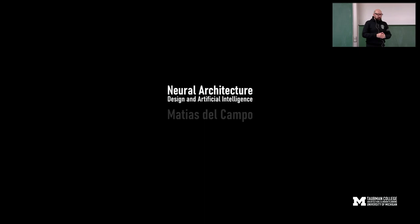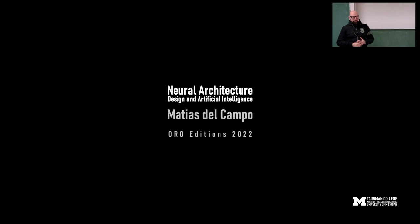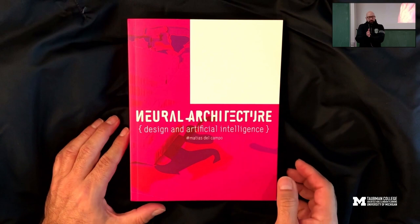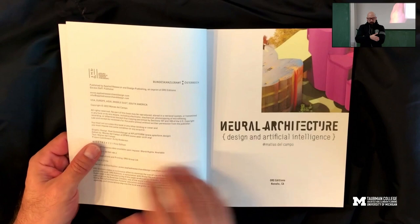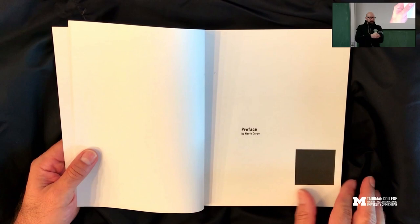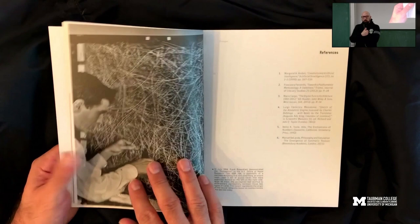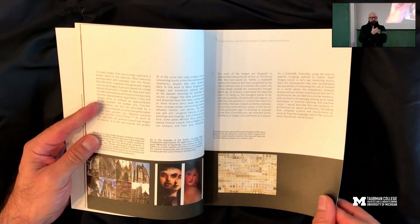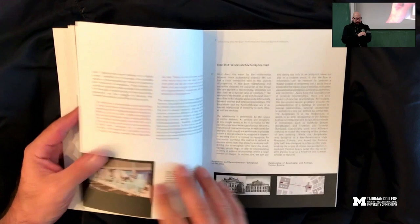The basis of the lecture is my book, Neural Architecture: Design and Artificial Intelligence, which was published with Oro last year, and basically collected the thoughts, ideas, concepts, and projects that we've done in this area for the last five or six years. It is not designed as a manual of how AI works, or how the algorithms work, or how the math behind it works, but rather discusses the cultural implications — like what does it mean if we as a discipline have access to almost the entire history of architecture and are able to create learning systems informed by that history?